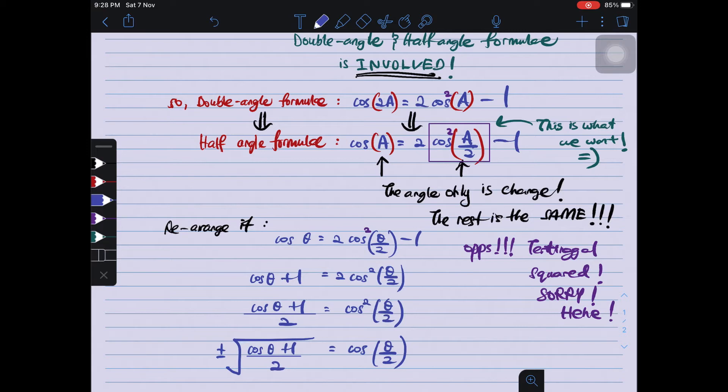Square root of the answer. The thing is, recall from the question given to us that sin θ equals to 1/4 at the quadrant of second one. The second quadrant, sebab apa? Sebab we are given angle 90 degree until 180 degree.